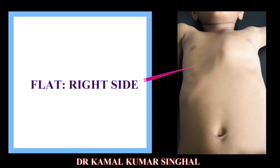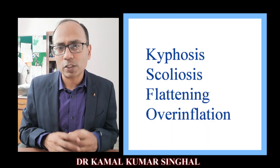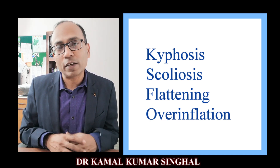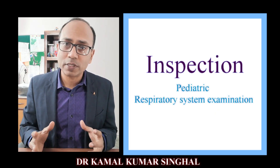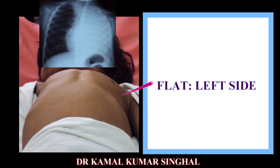In a child lying supine, you can also examine from the head end and the foot end of the bed. While examining the chest for shape and symmetry, specifically look for kyphosis, scoliosis, flattening, or overinflation of the chest wall. Kyphosis is forward bending of the spine and scoliosis is lateral bending of the spine — both restrict lung movement. When one side appears prominent, it could be due to curvature of the spine, the child's asymmetric position, volume loss, hyperinflation, or increased volume of thoracic content.